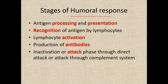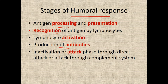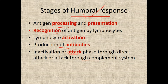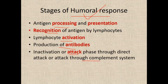Stages of humoral response: antigen processing and presentation; recognition of antigen by lymphocytes; lymphocyte activation; production of antibodies; and inactivation or attack phase, through direct attack or attack through the complement system. Here we are talking about the humoral response, so B lymphocyte activation and production leads to inactivation through direct attack or attack through the complement system.